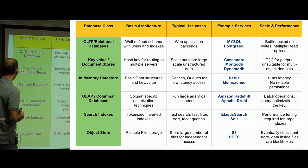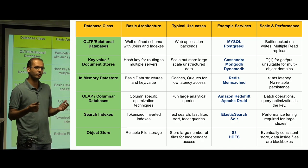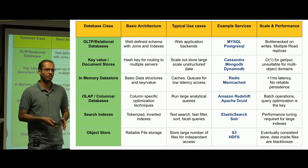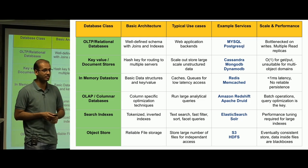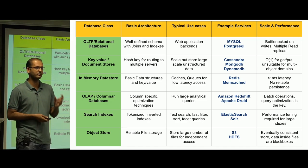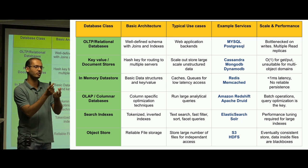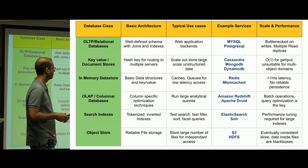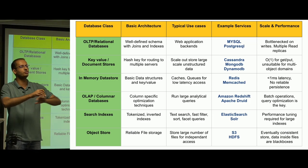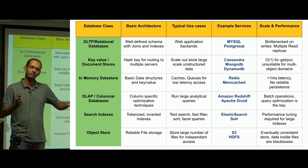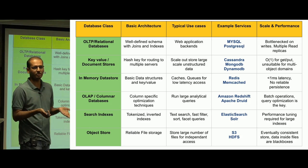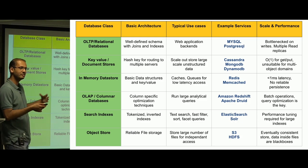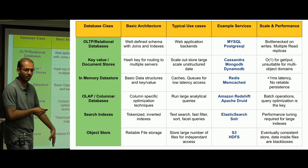In-memory stores are used as caches and low-latency queues. Then you have OLAP and columnar databases for analytical querying, where data is split by columns across different machines so queries run fast. You have search indexes, which are inverted indexes where each item is tokenized and term frequencies are stored. You have object stores — flat files on infrastructure like S3 where you can throw any number of files. Each of these has different SLAs and different promises. This is not an exhaustive list.